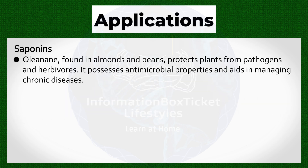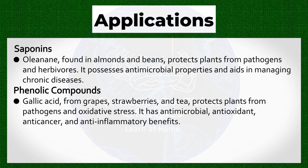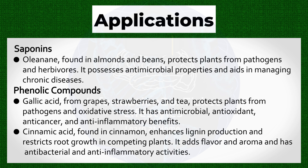Saponins applications: Oleanane, found in almonds and beans, protects plants from pathogens and herbivores. It possesses antimicrobial properties and aids in managing chronic diseases. Phenolic compounds applications: Gallic acid, from grapes, strawberries, and tea, protects plants from pathogens and oxidative stress. It has antimicrobial, antioxidant, anti-cancer, and anti-inflammatory benefits.